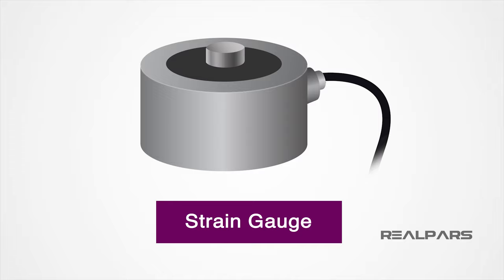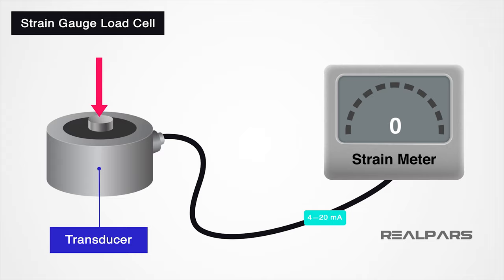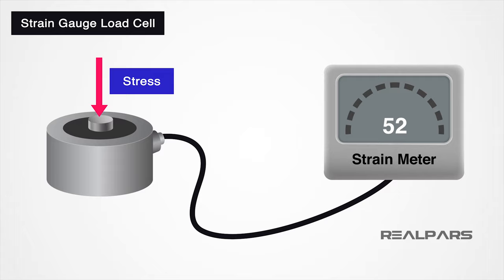The next type of load cell we will discuss is the strain gauge. This is the most popular style of the load cell. A strain gauge load cell is a transducer that changes in electrical resistance when under stress or strain. The electrical resistance is proportional to the stress or strain placed on the cell, making it easy to calibrate into an accurate measurement.